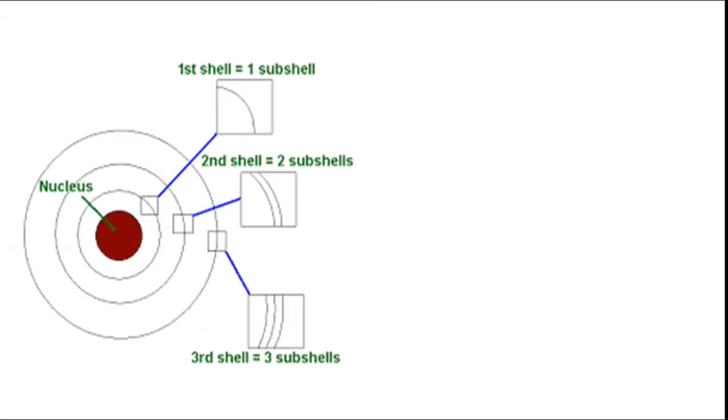The number of subshells in various shells are: For first shell, there is only one subshell. K shell contains only one subshell denoted by S or 1S. For second shell, two subshells. L shell has 2S and 2P.